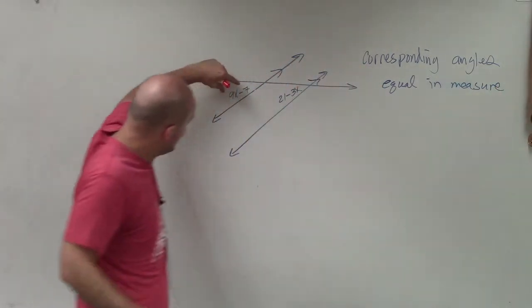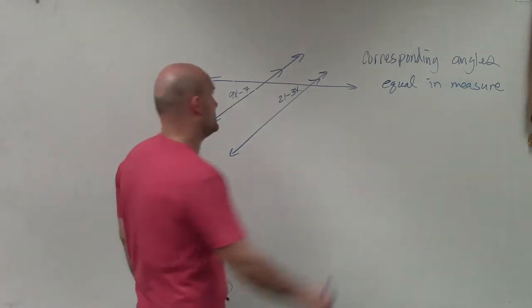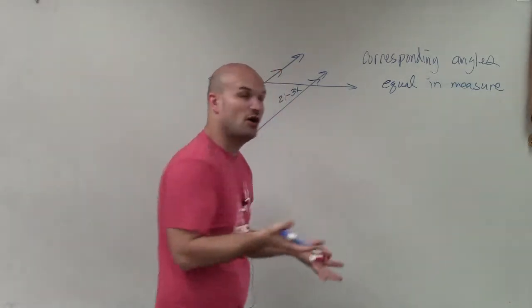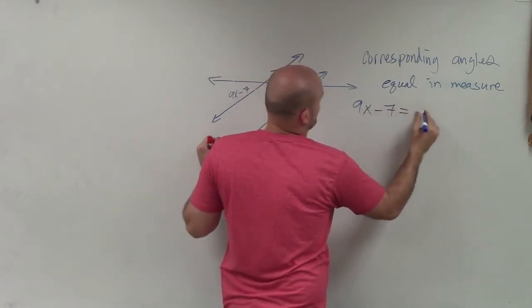So therefore, if this angle is 9x plus 7, that has to be equal to 21 minus 3x. Now I need to solve for x, so I'm going to set them equal to each other using an equation.